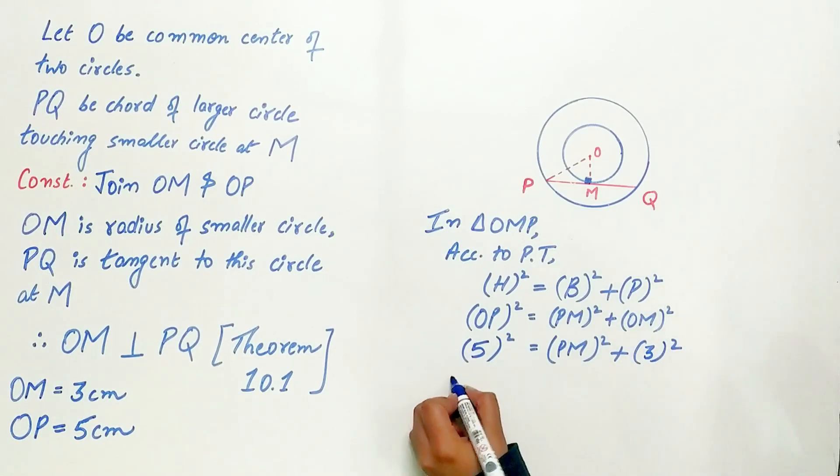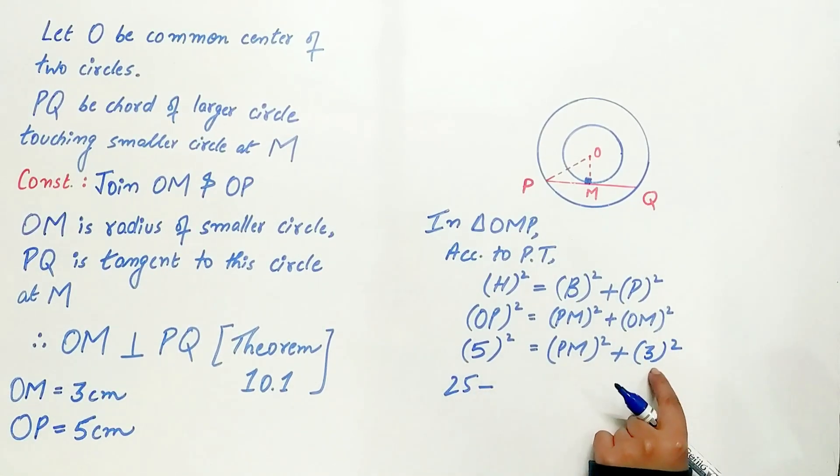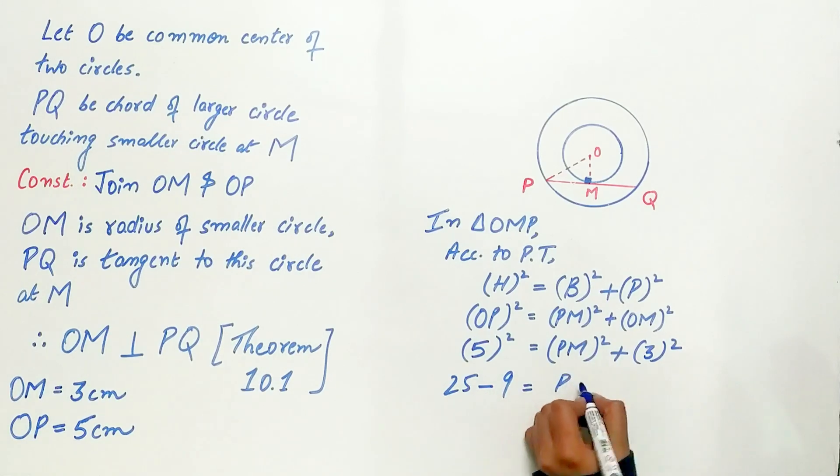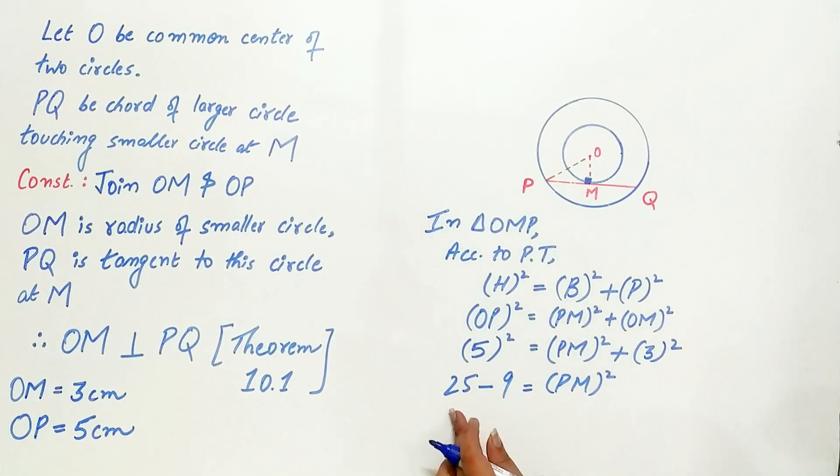5 square is 25, minus 3 square is 9, equals PM square. 25 minus 9 is 16. Exactly.